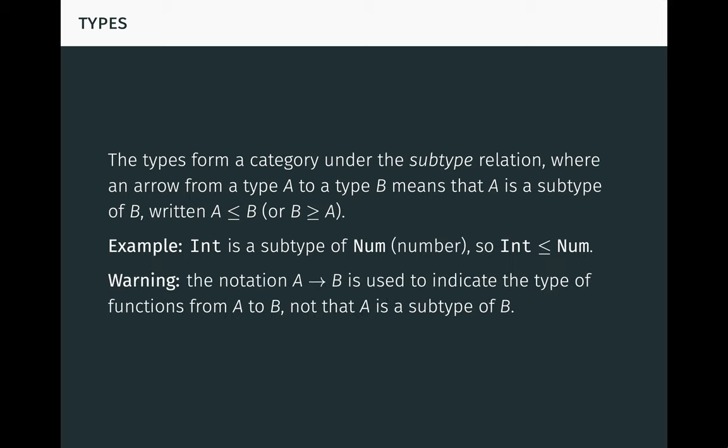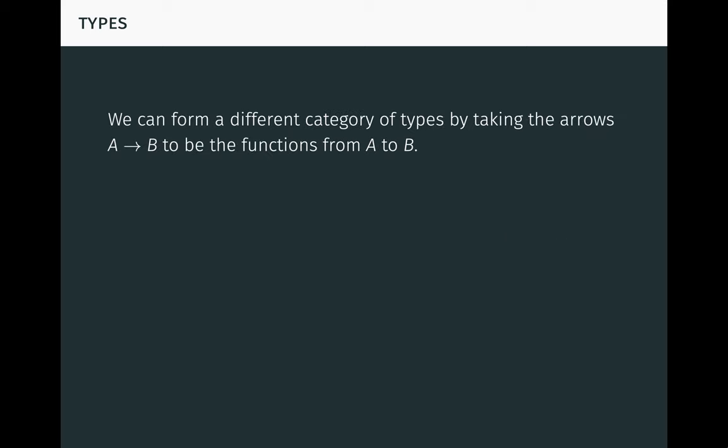Now, as a warning, the notation A → B is used to indicate the type of functions from A to B, as we saw on the previous slide, not to indicate that A is a subtype of B. So A → B is an object in this category, not an arrow, despite the arrow notation. We always use the less than notation for arrows in this category.